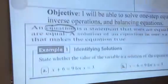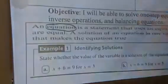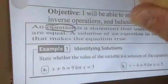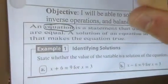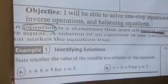An equation is a huge thing you will see over and over. It is a statement that uses an equal sign. An equation always has an equal sign. If you see an equal sign, you know it is an equation. If it does not have an equal sign, it is an expression.